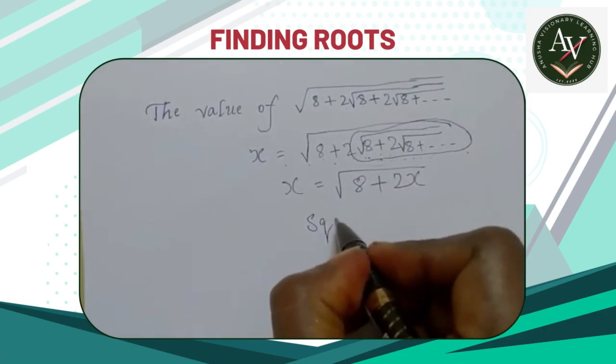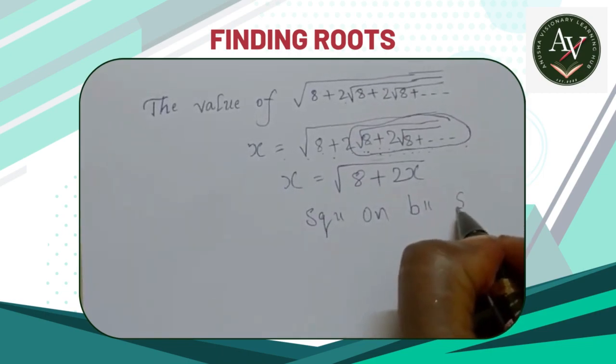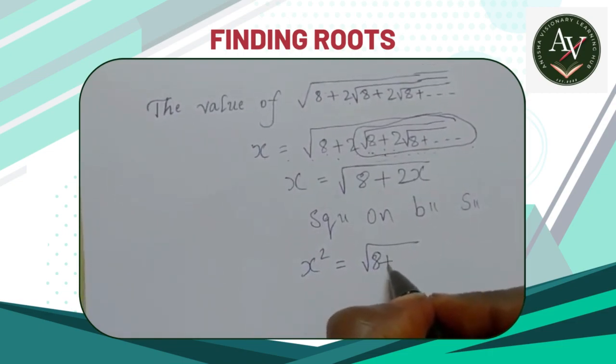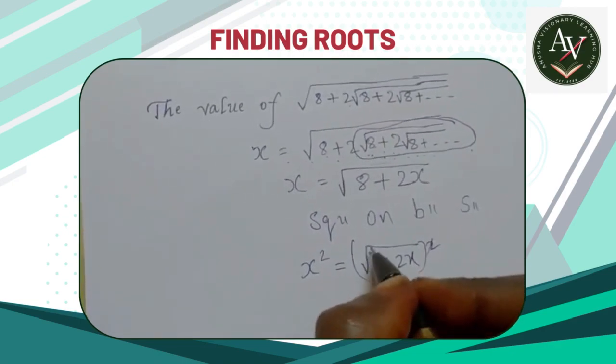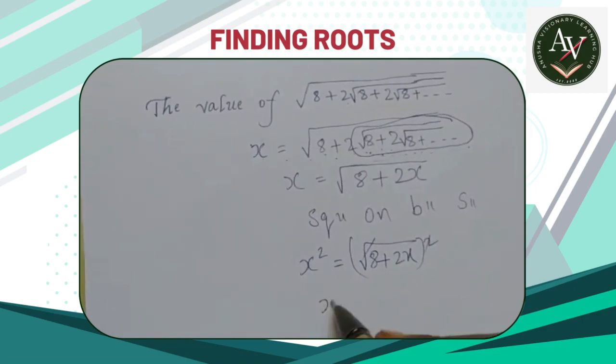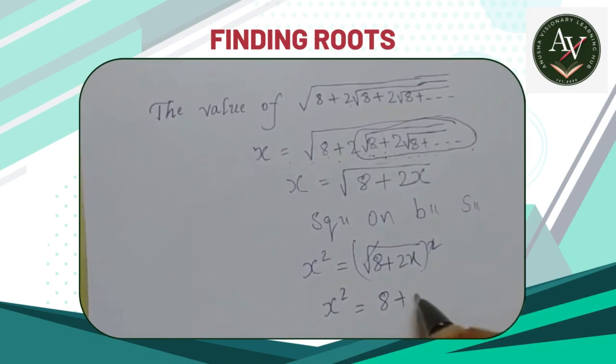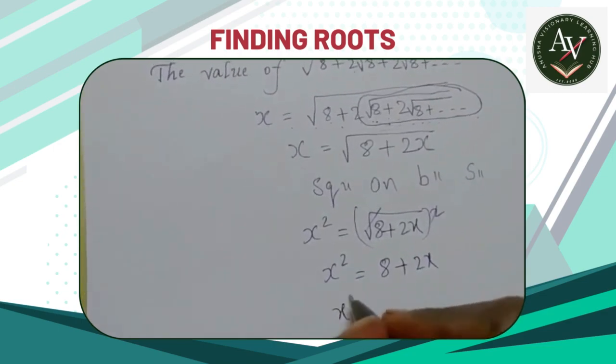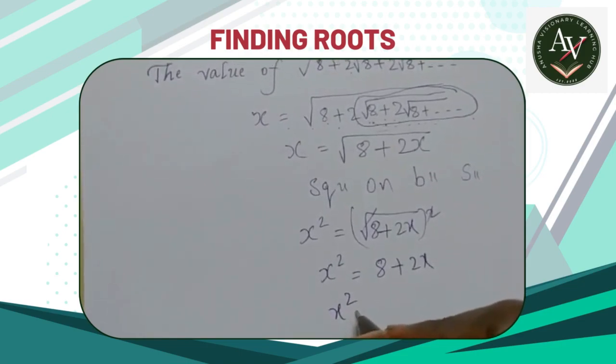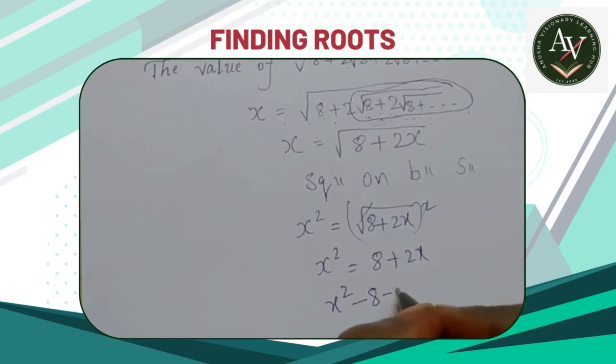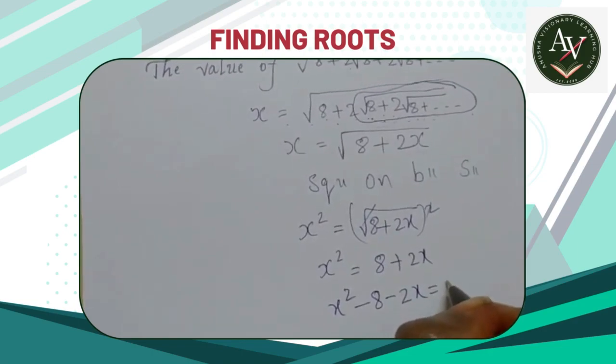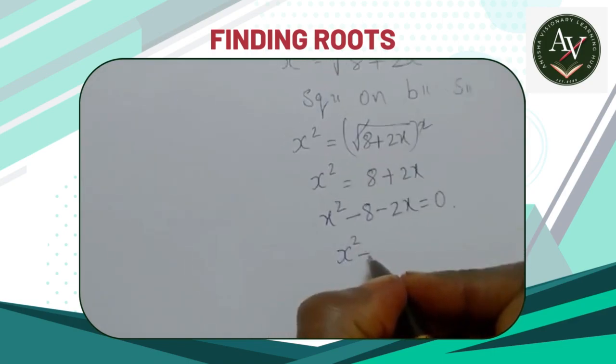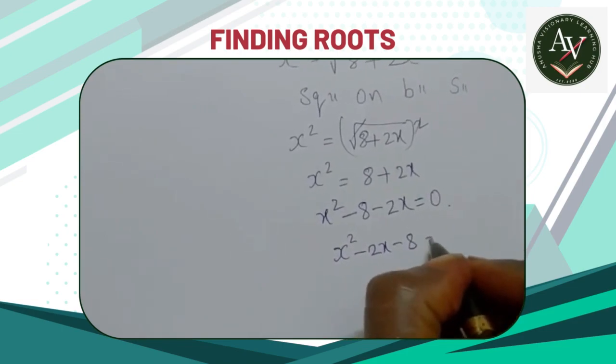Now squaring on both sides, x² = (√(8 + 2x))². Square and root cancel, so x² = 8 + 2x. Now according to transposition, x² - 2x - 8 = 0.